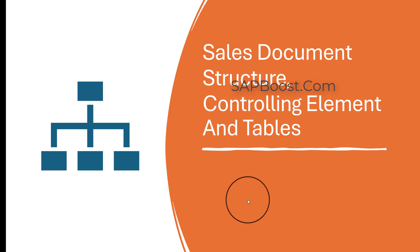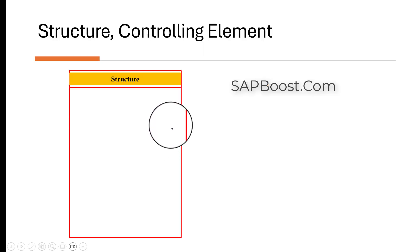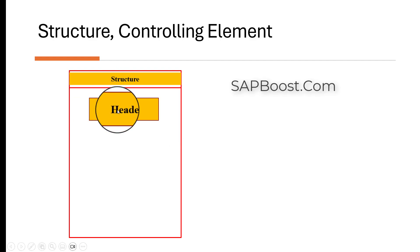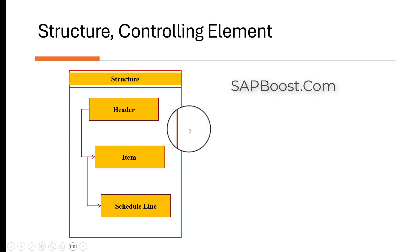We'll understand the sales document structure, its controlling elements, and respective tables. The sales document has three structures: one is the header, second is the item, and third is the schedule lines. A header may have multiple items and one item may have multiple schedule lines.